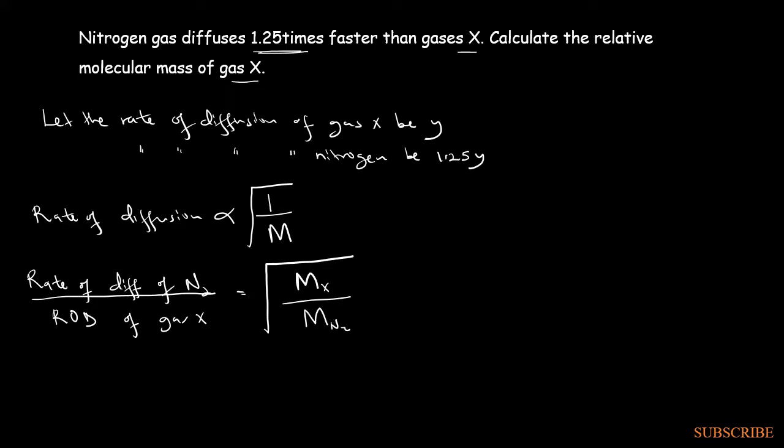Remember it's inversely proportional—that's why you see that molecular mass of nitrogen is below that of X. So that will mean that the rate of diffusion of nitrogen, 1.25y, divided by that of X, which is y, is equal to the molecular mass of X (that's what we want to find, Mx) divided by the molecular mass of nitrogen.